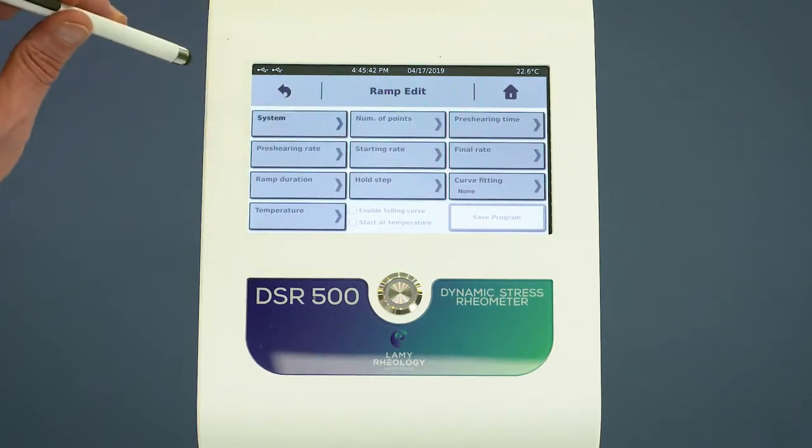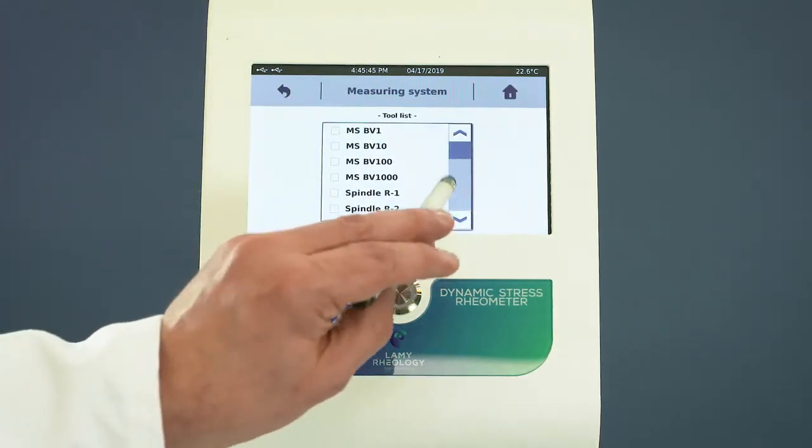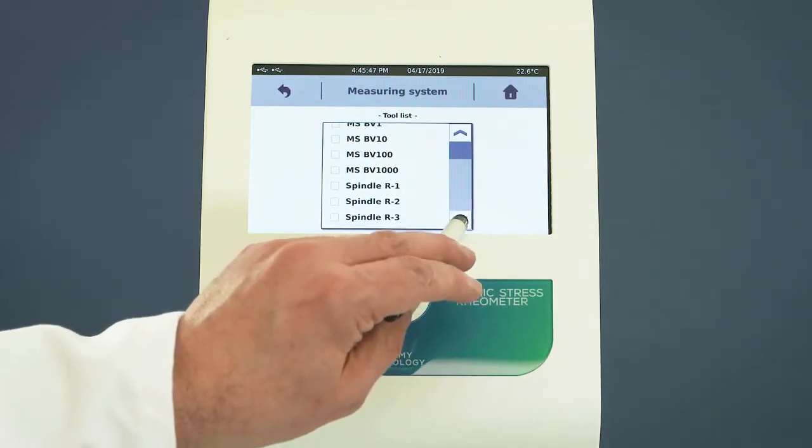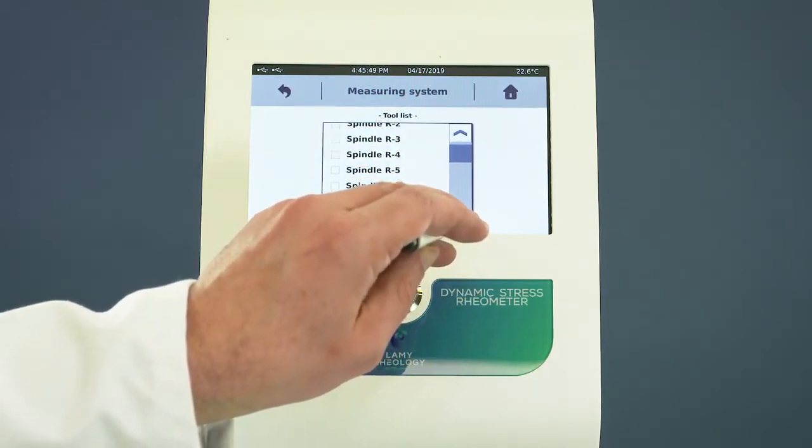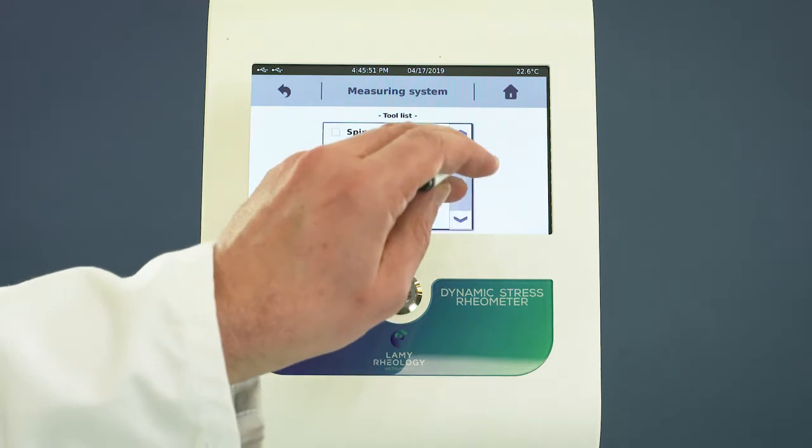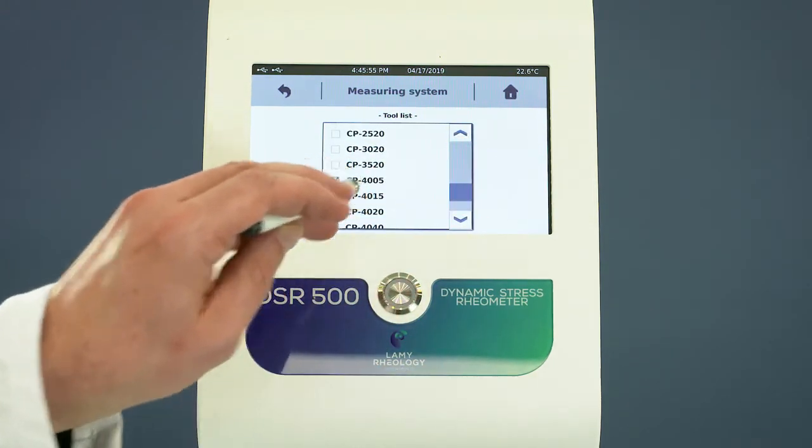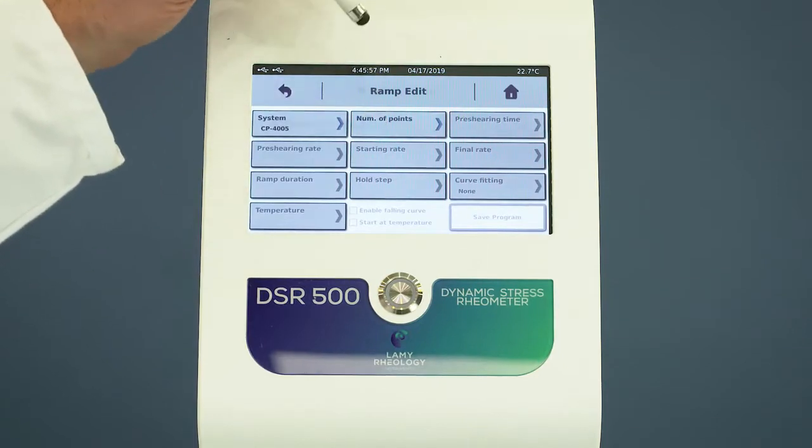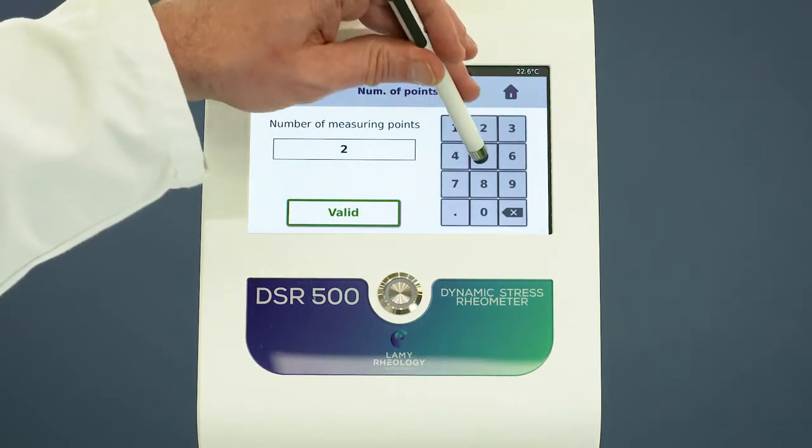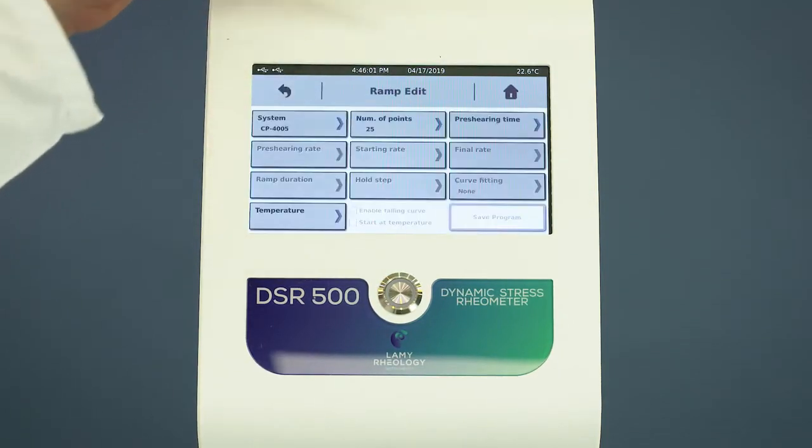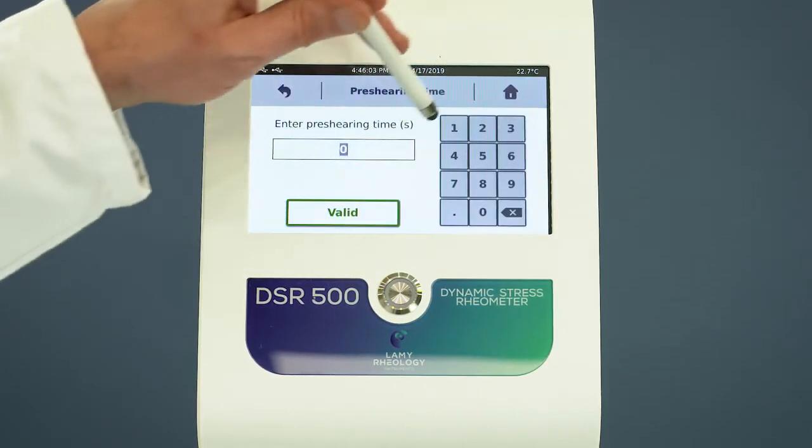Select the measuring system on the list. Set a number of points. Set the pre-shearing phase if needed.